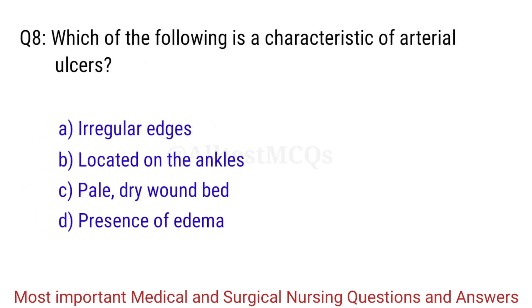Q8. Which of the following is a characteristic of arterial ulcers? The right answer is Option C: Pale, dry wound bed.